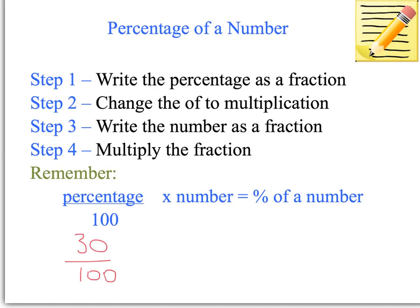And we know that when we're looking at 30% of $80, the of means multiplication. So we can do that. Then we need to write the second number as a fraction. So that's the $80. That is 80 over 1. And then we multiply the fraction as per normal, remembering to cancel out so we don't multiply big numbers.